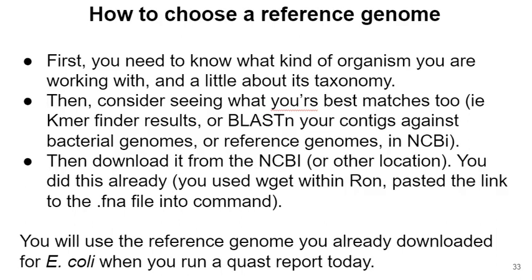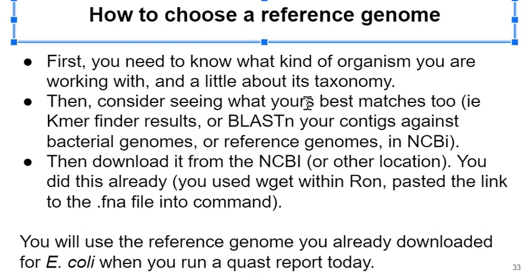To find or choose a reference genome, you need to know what your organism is — you need to know a little bit about its taxonomic classification. You can do this using the tools shown in an earlier video lecture. For example, you can use K-mer Finder, or you can take entire contigs and BLAST them against the reference databases in NCBI. You can also use local BLAST to pull out marker genes. In any case, it's a good idea to have an idea what your organism is. Then you're going to go look on the NCBI for a reference genome and download it.